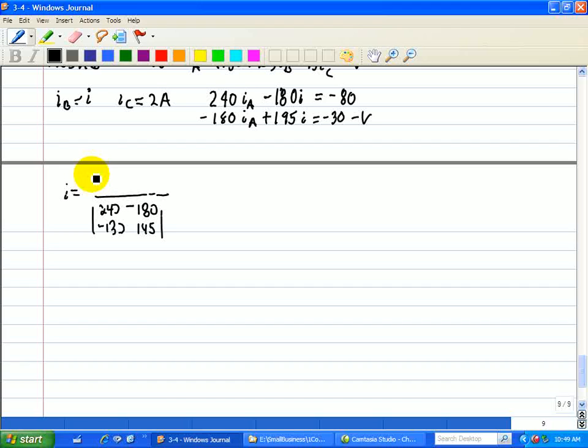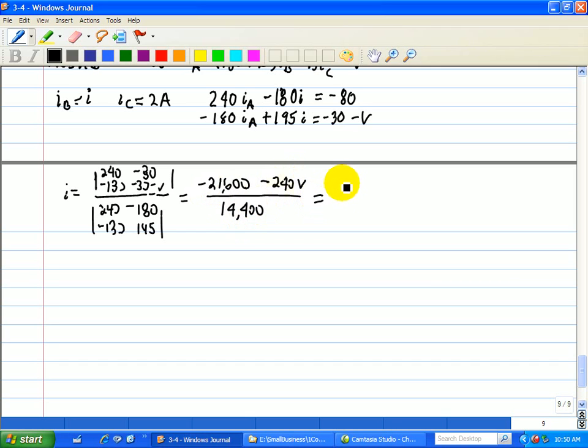And then in the numerator, we have, solving for I, 240 here, negative 180 here, then we replace it with the terms on the right, 80 here, and minus 30 minus V here. And that will give us minus 21,600 minus 240V all over 14,400. And we can simplify that to negative 1.5 minus V over 60.